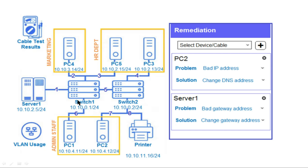PC1 is connected to Switch 1, PC2 is connected to Switch 2, PC3 is connected to Switch 2, PC5 is connected to Switch 1, and PC4 is connected to Switch 1. Switch 1 and Switch 2 are connected to Server 1. The printer is also connected to Switch 2. On the right-hand side of the screen is the remediation window where you select the correct drop-down menu options according to the identified problem and solution.